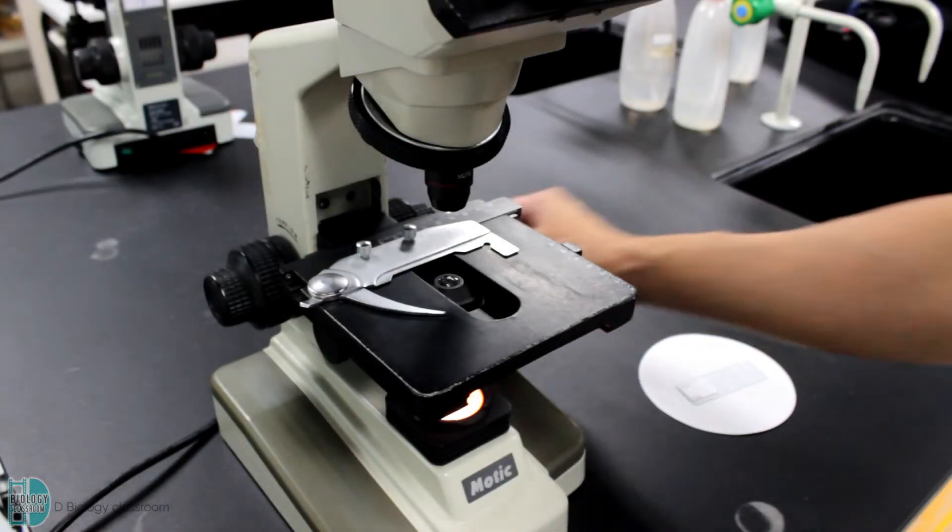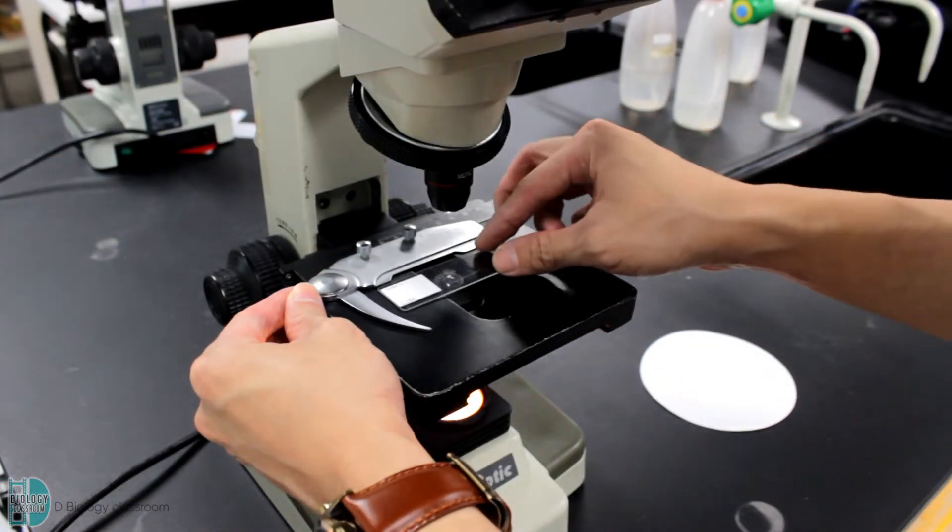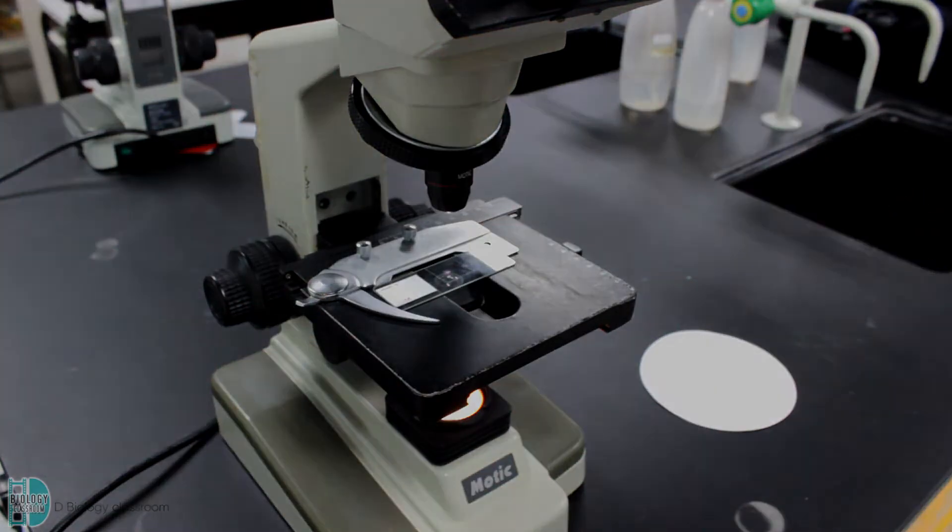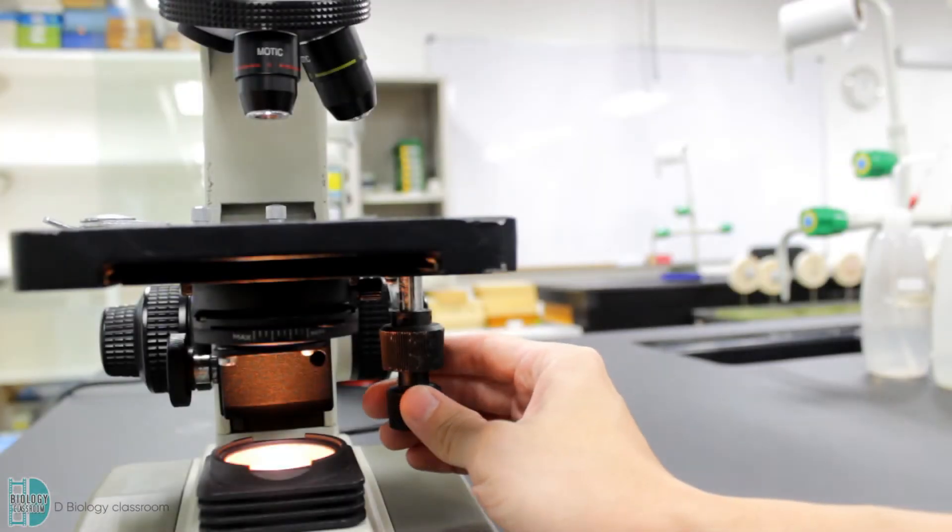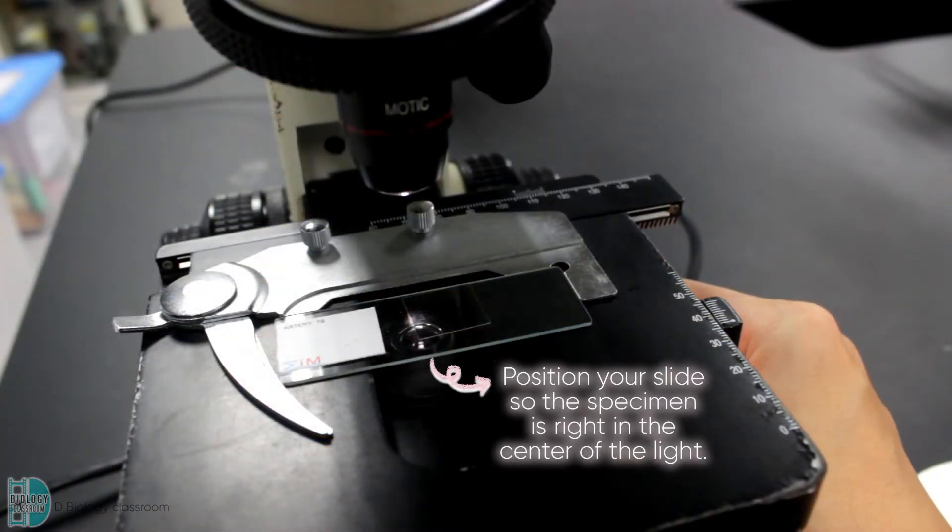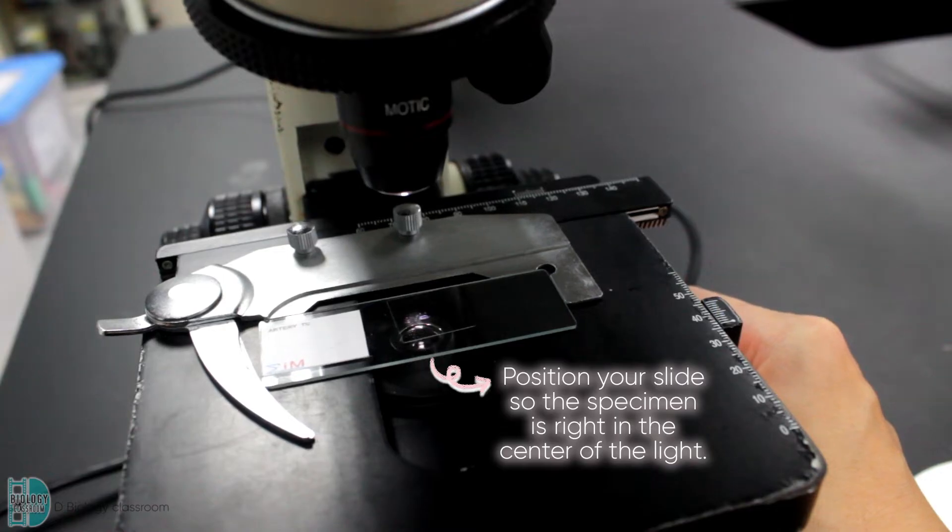Now, you can switch on the light source. Place the slide on the stage and use the stage clip to hold it in place. Use the stage controls to adjust the position of the slide. Make sure the specimen is right in the center of the light source.